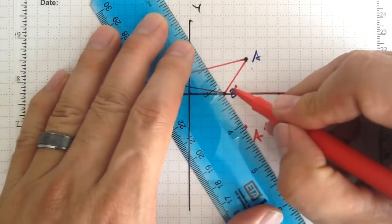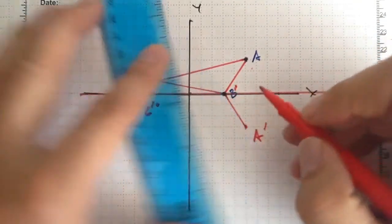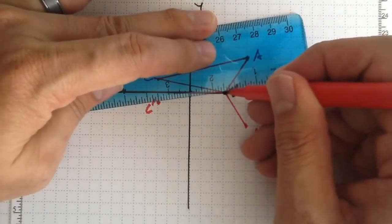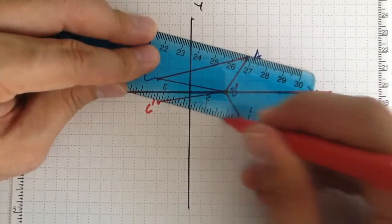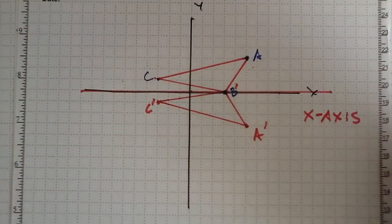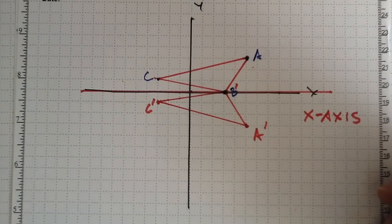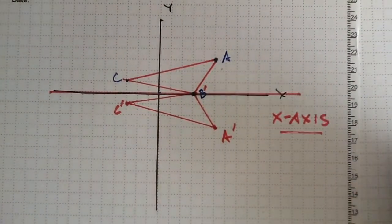Now if I've done this right and I joined together my points, what I should get is a congruent triangle, but it's just the mirror image version of the original. All right, so that's reflecting over the x-axis.